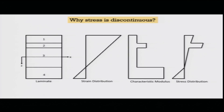Why is stress discontinuous? The strain distribution is always continuous — there is always some strain at the geometric midpoint, and it is continuous as you can see. But if the characteristic modulus is different at different layers — some layers soft, some stiff — then each layer's modulus multiplied by the continuous strain gives a different stress. Since the modulus is different at different layers, the stress is discontinuous across the laminate. That is why the stress distribution discontinuity arises.